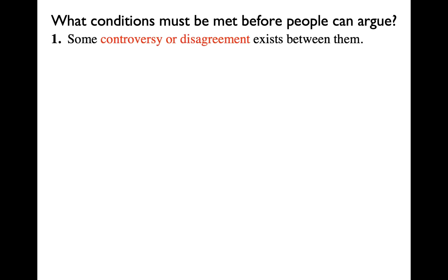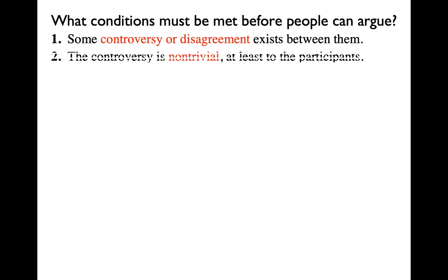So what is one precondition? Some controversy or disagreement exists between them — there has to be something to argue about. We're really getting down to some pretty obvious stuff here, but it's going to be important. The controversy is not trivial, at least to the participants. If it were trivial to one of them, the argument would not last long. If you start an argument and the other person doesn't care, they would probably just admit it or find that it's not worth arguing about.